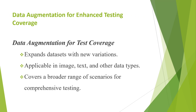Data augmentation enabled by machine learning expands a dataset by creating variations of existing data points. This technique is commonly used in image processing, where slight adjustments like changing brightness or rotation can generate new images from originals. But it's also useful in other areas. For instance, in text data, machine learning can modify phrases to create additional examples for natural language processing tests.